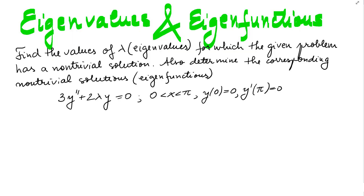In this video, we'll solve an eigenvalue-eigenfunction problem. The problem is: find the values of lambda (eigenvalues) for which the given problem has a non-trivial solution. Also determine the corresponding non-trivial solutions, which are also called eigenfunctions. The problem is 3y'' + 2λy = 0, x between 0 and π, with boundary conditions y(0) = 0 and y'(π) = 0.